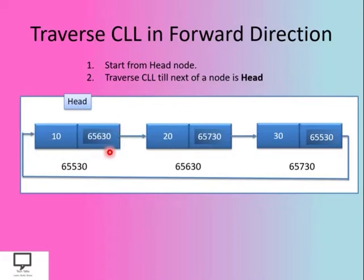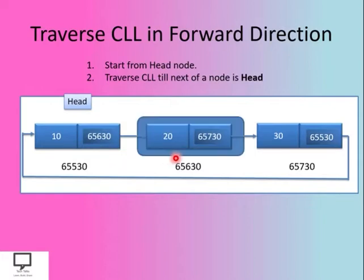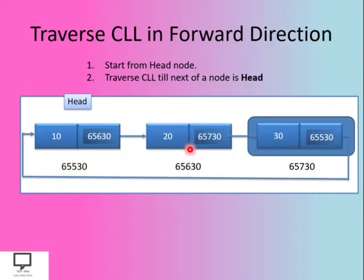Let's check for each node — is its next field equal to the head node? No, so we move forward and display the information field of the node. We continue moving forward, checking each node's next field. When we find a node whose next field holds the address of the head node, it indicates this is the end of the list, and we stop at this position.